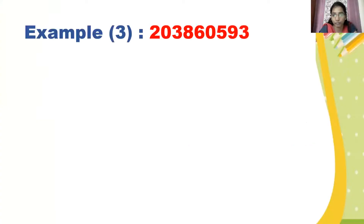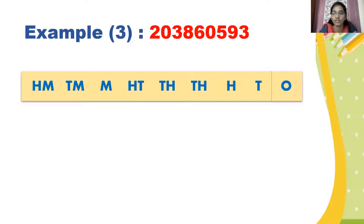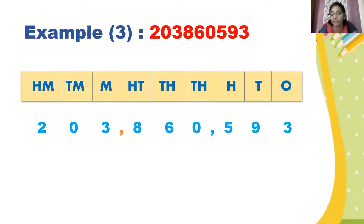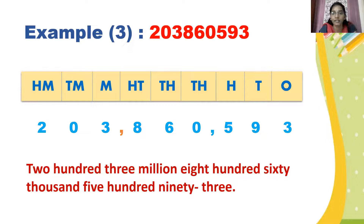Let's take another example. You have the numeral 2, 0, 3, 8, 6, 0, 5, 9, 3. To write this numeral according to international system, you must make a note of the places first: 1, 10, 100, 1000, 10,000, 100,000, million. Now insert commas to separate the periods. So here you got the number that is 203,860,593. This is how you insert commas in the given numeral to separate the periods according to international system of numeration.